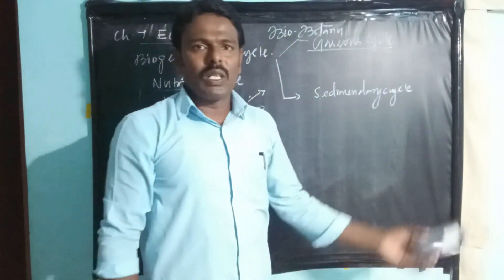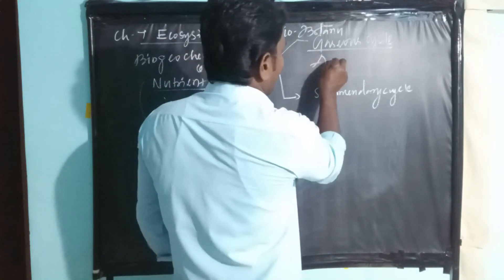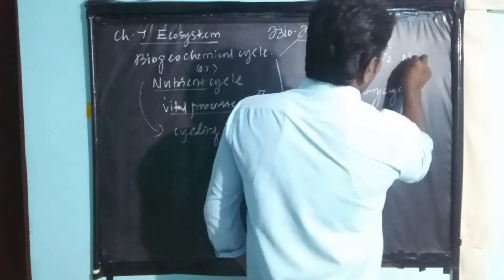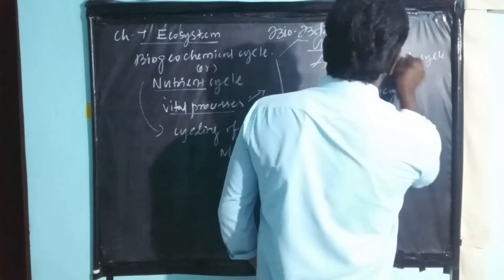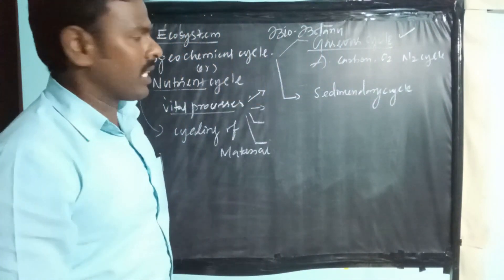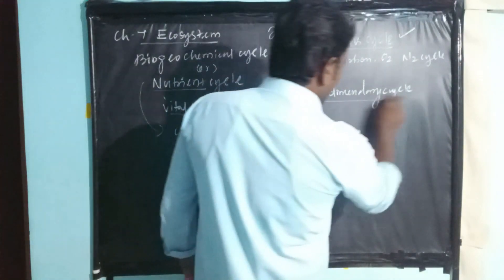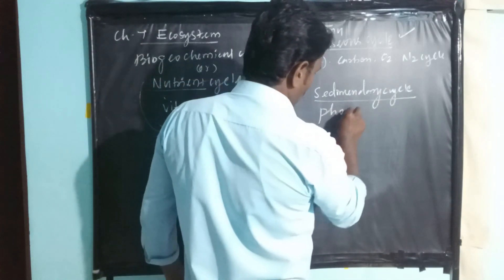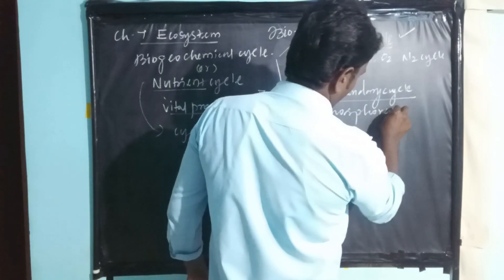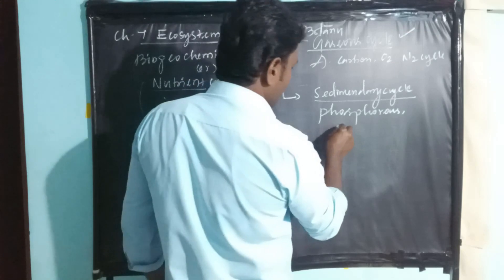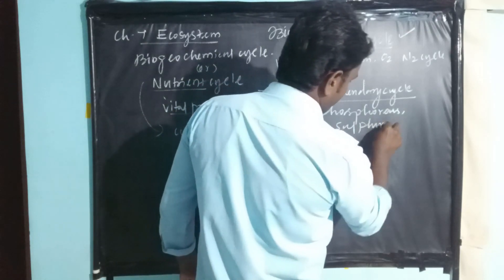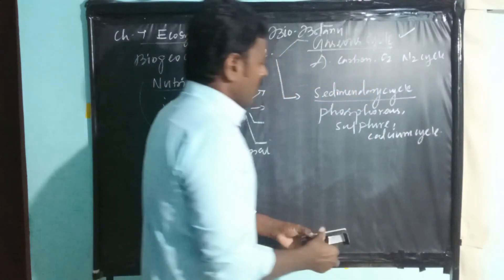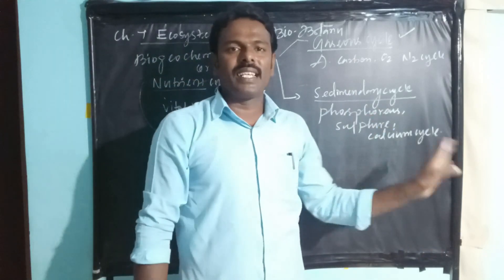The gaseous cycle includes carbon, oxygen, and nitrogen cycles. The sedimentary cycle includes phosphorus, sulfur, and calcium cycles. Gaseous cycles are present in the atmosphere while sedimentary cycles are present in the soil.